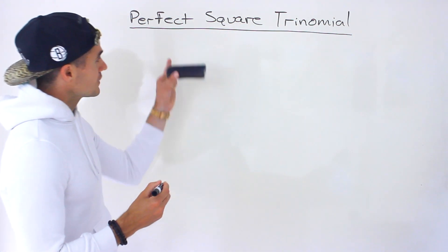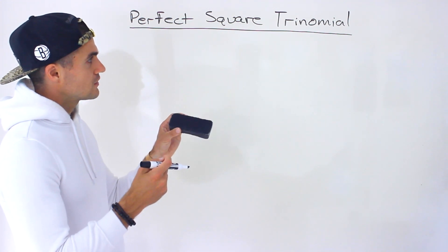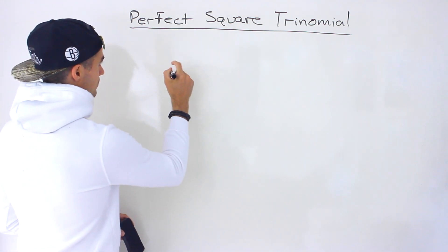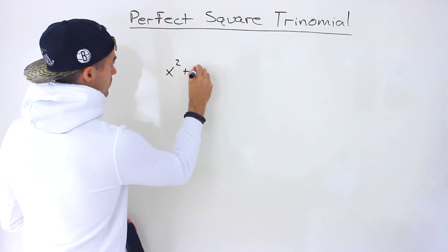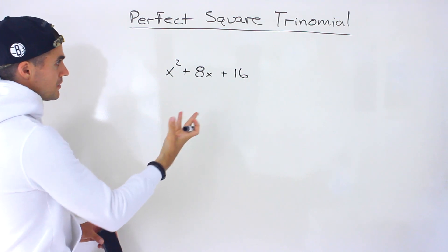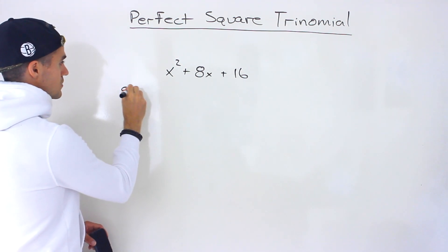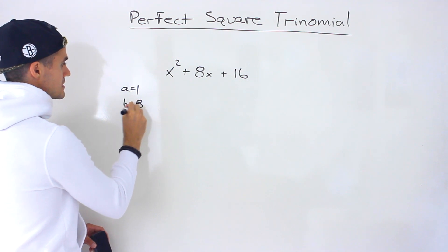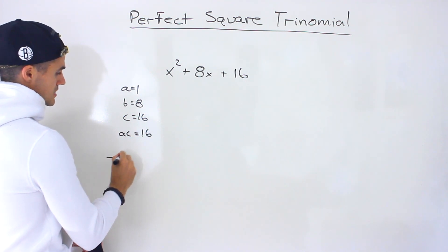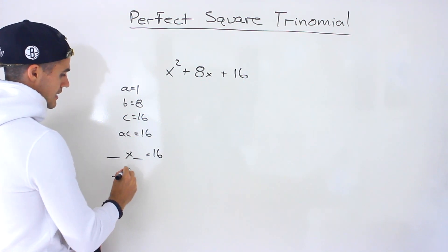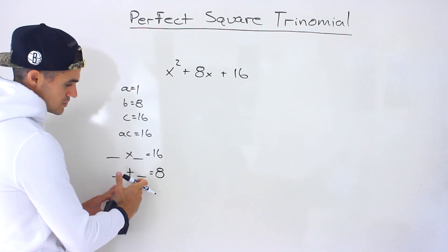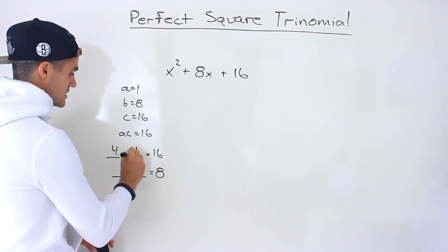A perfect square trinomial is going to factor into two identical factors. An example would be x squared plus 8x plus 16. This just looks like a standard quadratic, but if we factor it with decomposition: the a value is 1, the b value is 8, the c value is 16, so the ac value is 16. We need two numbers that multiply to 16 and add up to 8. With a perfect square trinomial, these two numbers are always going to be the same — in this case, 4.